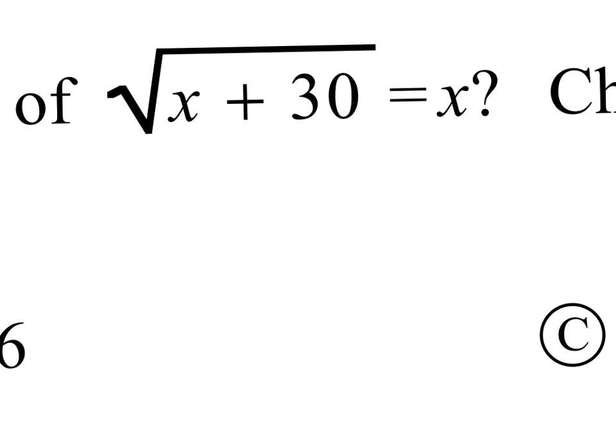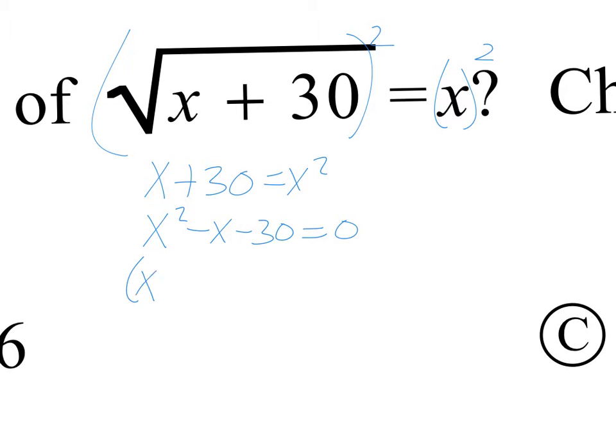For the next problem, we've got the square root of x plus 30 is equal to x. I'm going to start off by squaring both sides. In doing so, we get x plus 30 is equal to x squared. I'm going to bring everything to one side, and we get x squared minus x minus 30 is equal to 0. That needs to be factored, and it factors into x minus 6 and x plus 5.